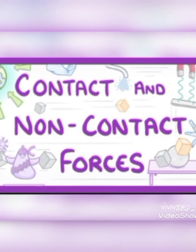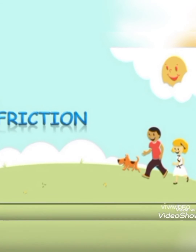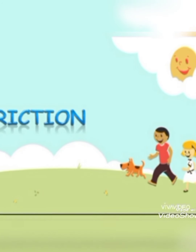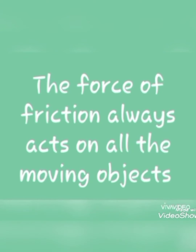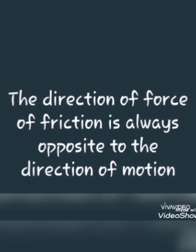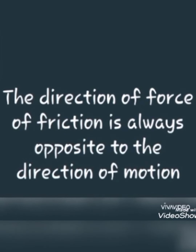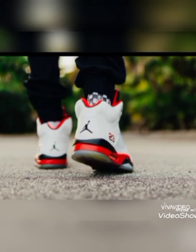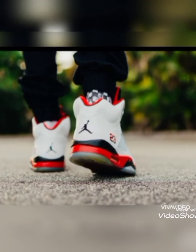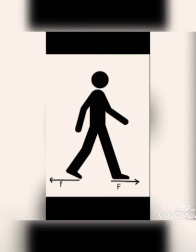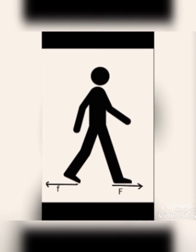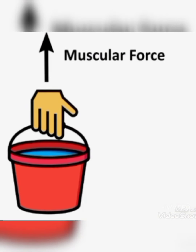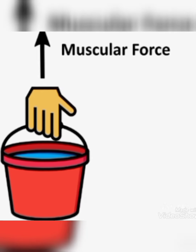In the last class we discussed about friction. We know the force of friction always acts on all moving objects, and the direction of force of friction is opposite to the direction of motion. For example, while walking we apply frictional force. We studied about contact forces — that is the muscular force and the frictional force are contact forces.